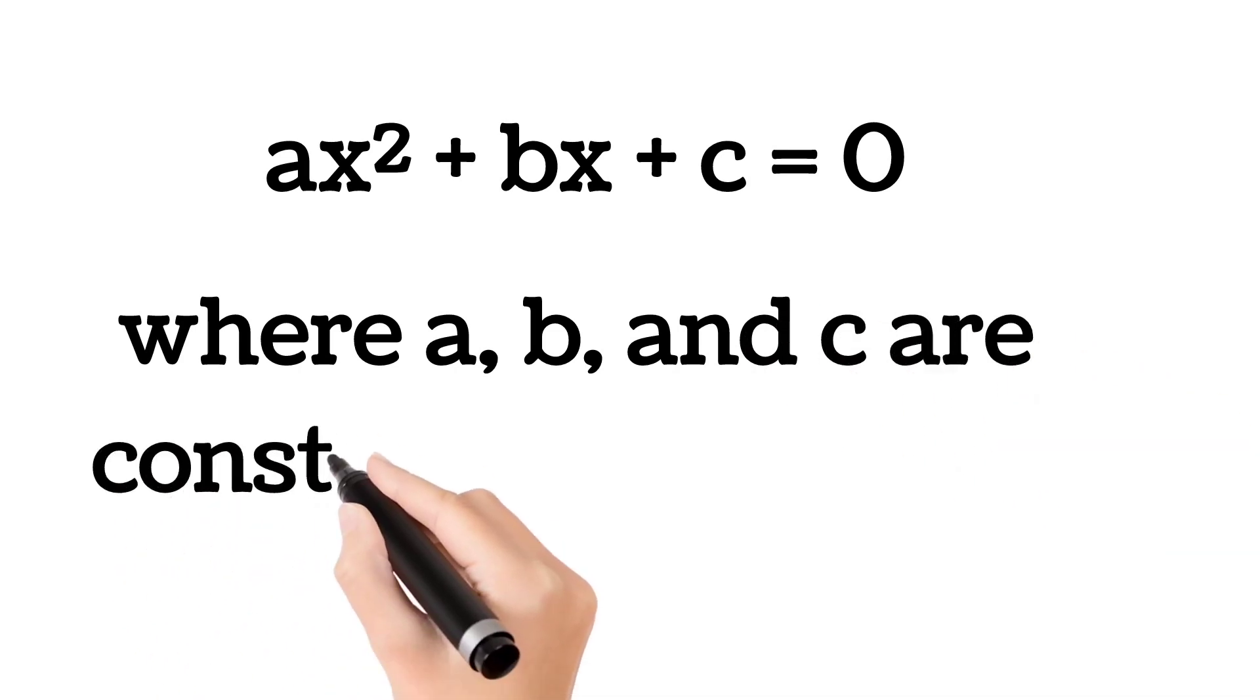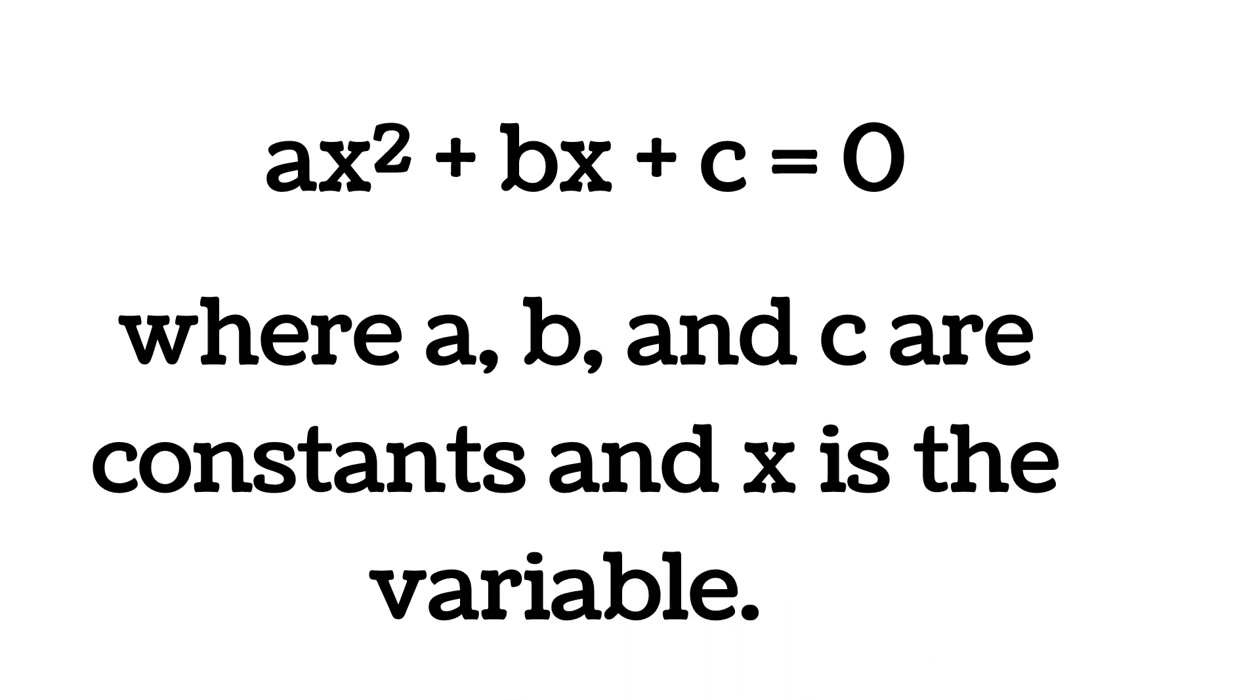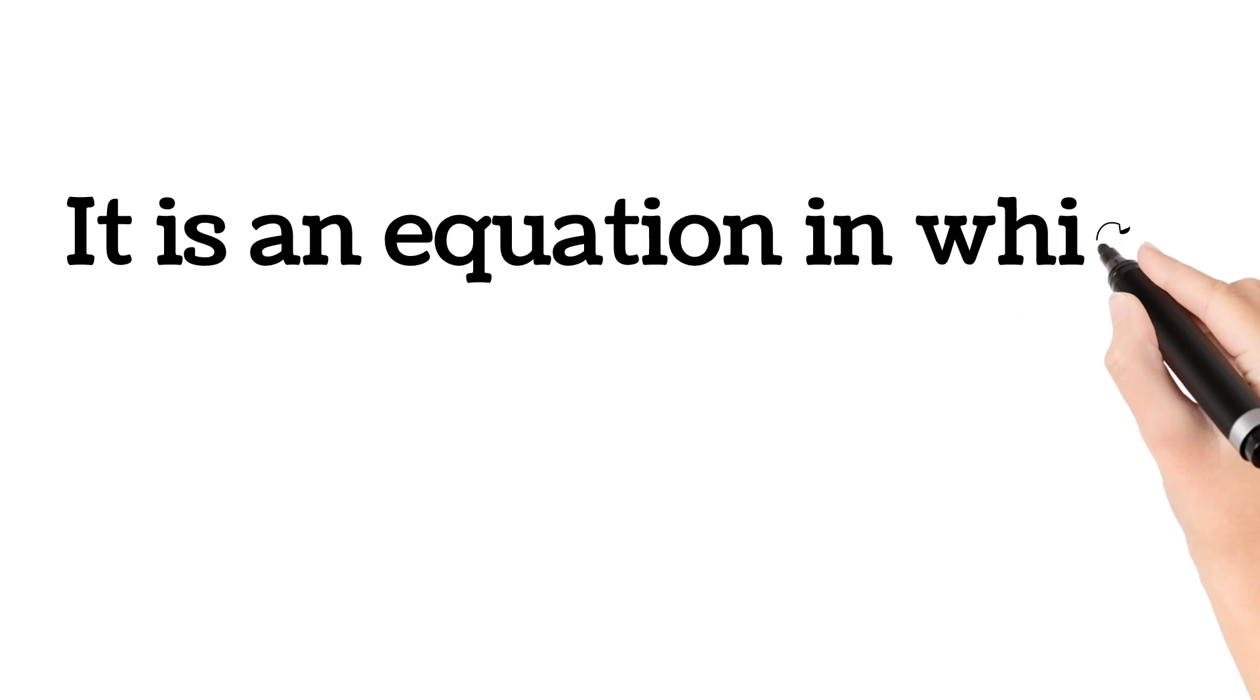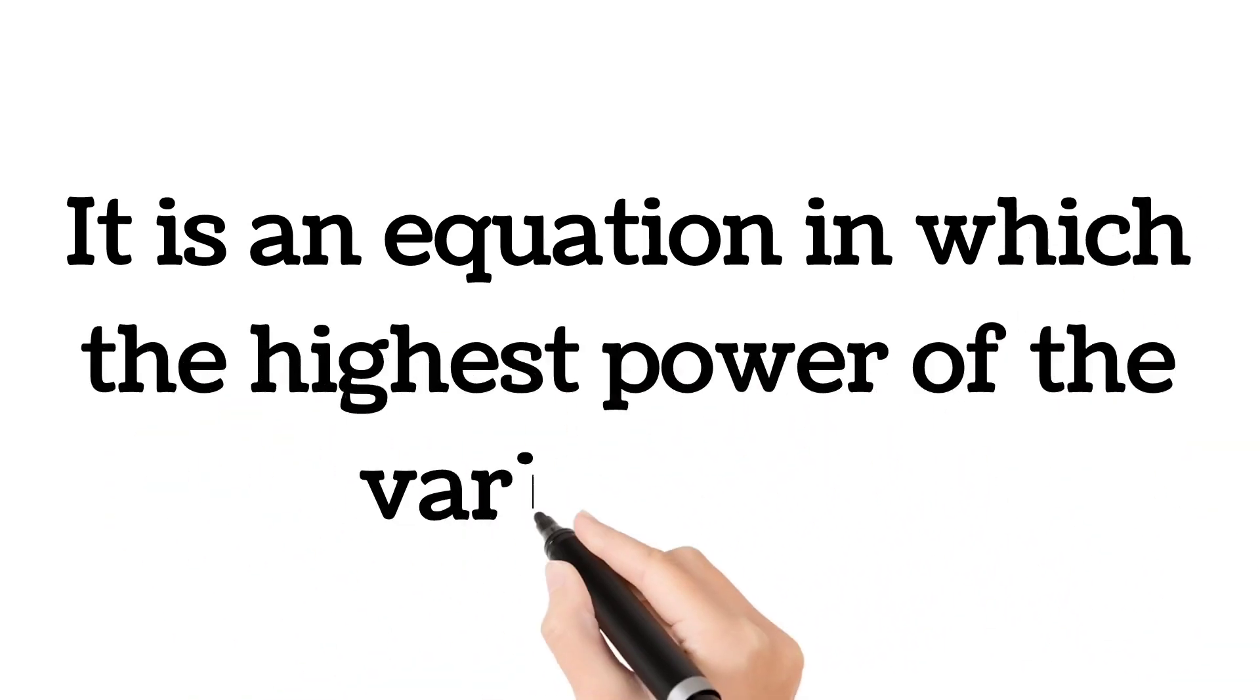Here, a, b, and c are constants and x is the variable. So we can say that a quadratic equation is an equation in which the highest power of the variable is two.